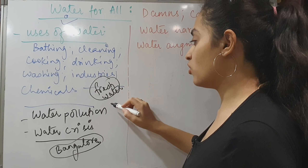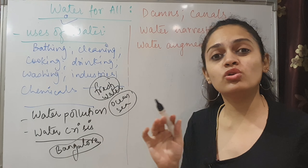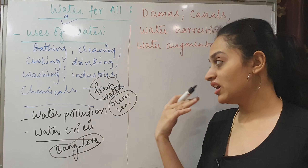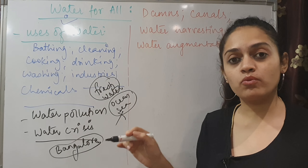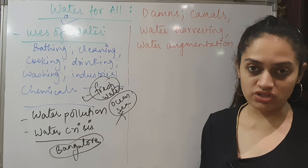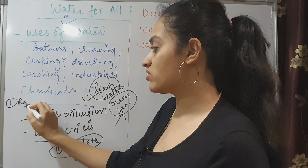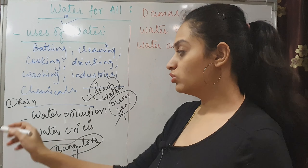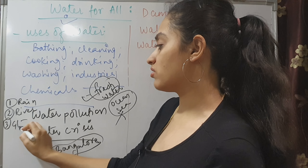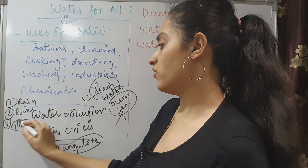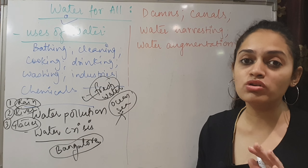There is ocean and sea, but that is salt water. You can't use it for food, factories, industries, cooking, bathing, or cleaning. What you need is fresh water. What are the sources of fresh water? The biggest source is rain, the second is rivers, and the third is glaciers in the form of ice. Those are the three main sources of fresh water. There is also underground water.